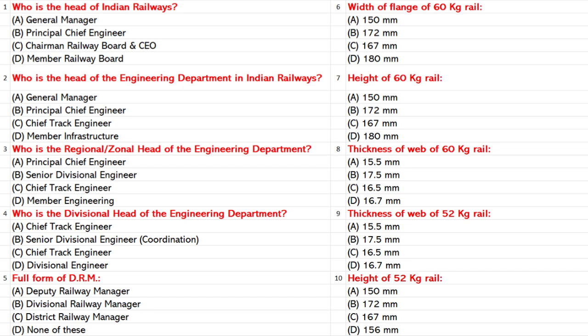Who is the head of Indian Railways? A. General Manager. B. Principal Chief Engineer. C. Chairman Railway Board and CEO. D. Member Railway Board. Answer: C. Chairman Railway Board and CEO.